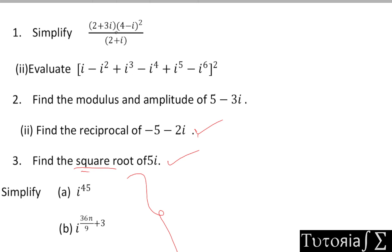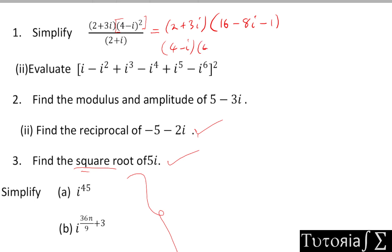The first question is to simplify (2 + 3i) multiplied by (4 - i)² over (2 + i). We'll start with expanding (4 - i)², which gives us 16 - 8i - 8i - 1, so that is (4 - i) times (4 - i). Distributing that, we get that expression, which is all over (2 + i).